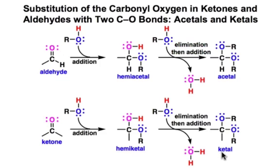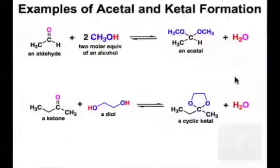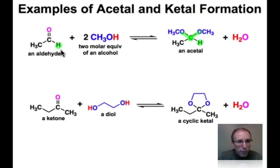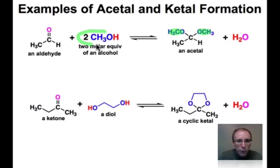Let's look at some real bonds and atoms — an example of each. Starting with the acetal, we can recognize it because there's a carbon connected to a pair of carbon-oxygen single bonds. That carbon is also connected to a hydrogen, so we know it came from an aldehyde. Those alkoxide segments — in this case methoxide segments — were derived from two methanol molecules, and we can see there's a loss of water.